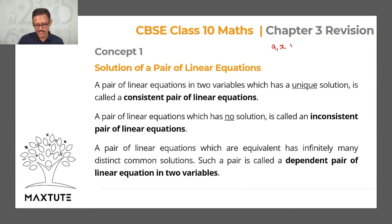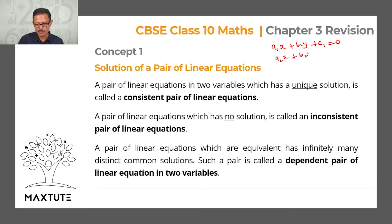The first equation is a1x plus b1y plus c1 equals 0. This is one linear equation. The second one is a2x plus b2y plus c2 equals 0.